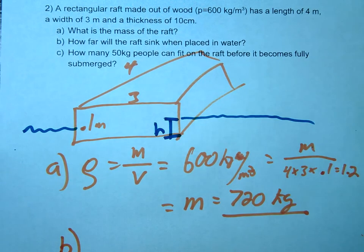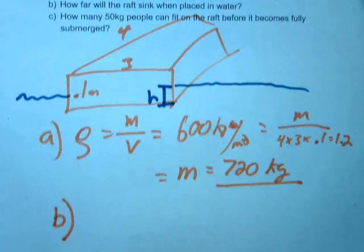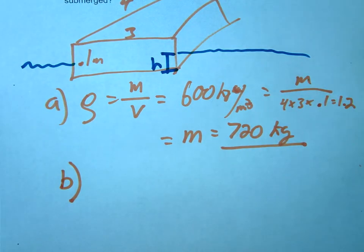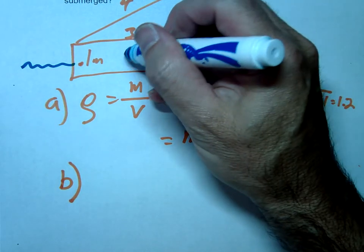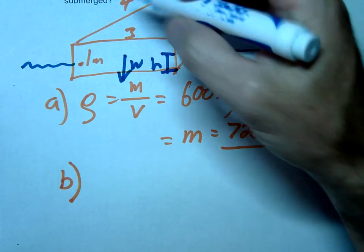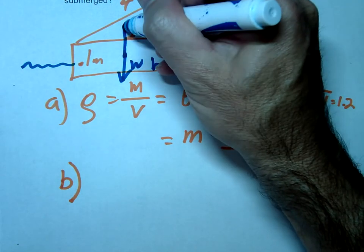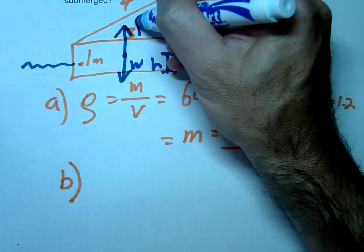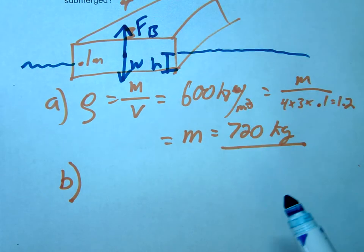So in this case we just use our free body diagram. So we have the weight pulling down, the raft's trying to go down with gravity, then something's holding it up. So the thing holding it up is what we call our buoyancy force.